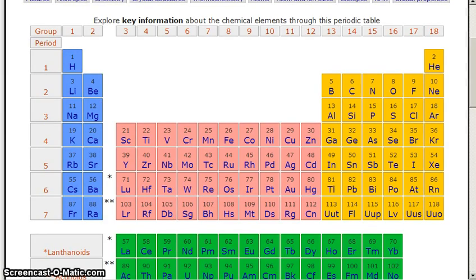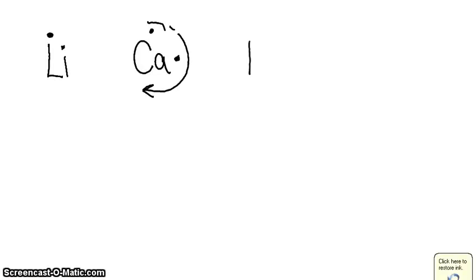Our next example is nitrogen. We see that nitrogen has five valence electrons. So you go 1, 2, 3, 4, and then you start going around again, 5.